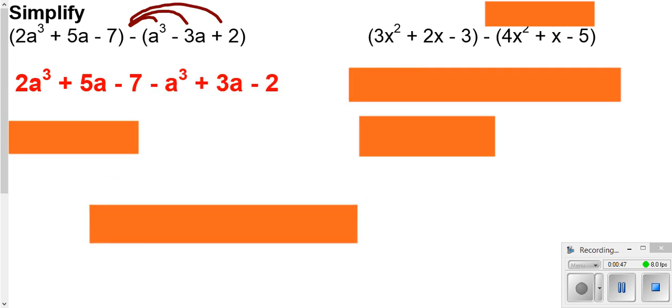Then we can go ahead and collect like terms. Now, like terms are going to be those things that have the same exponents. So these would be like terms. And these would be like terms. And then the normal constants would also be like terms.